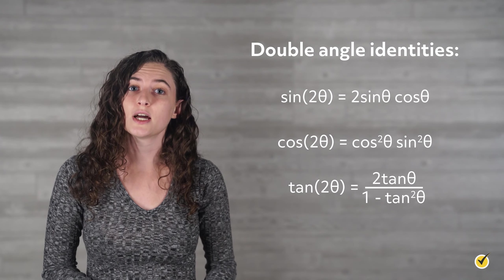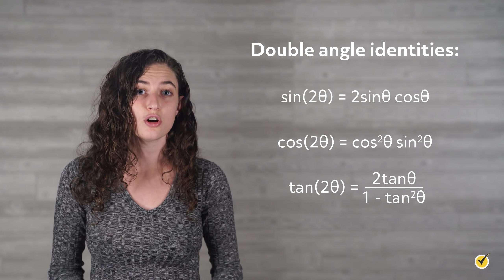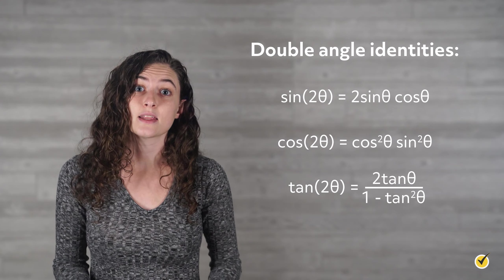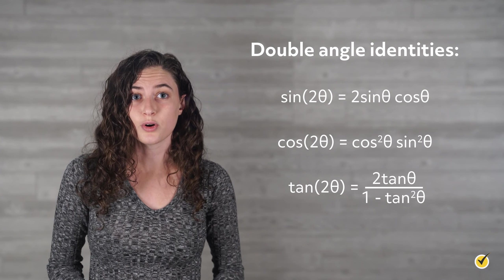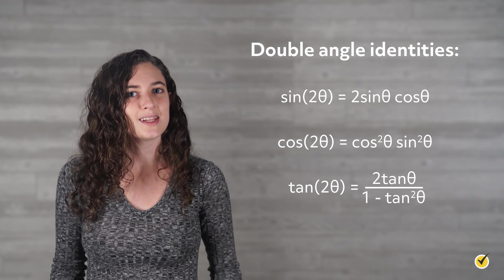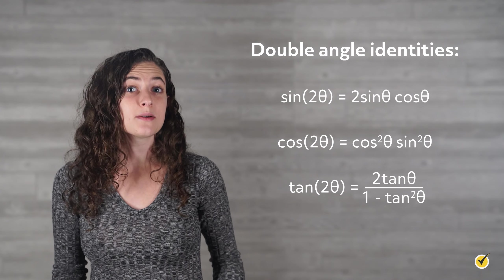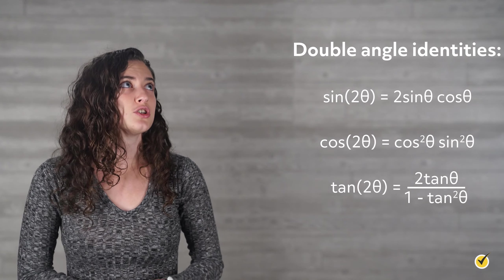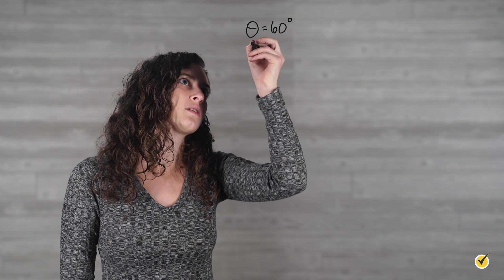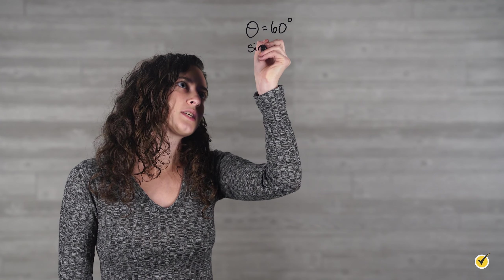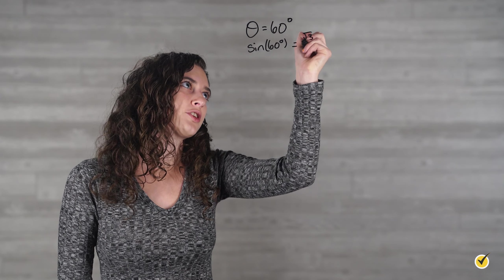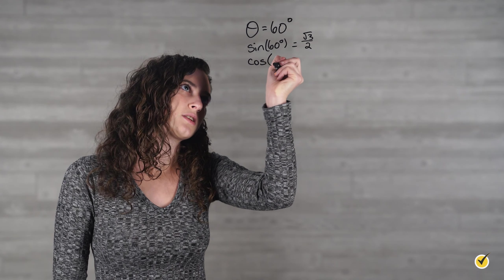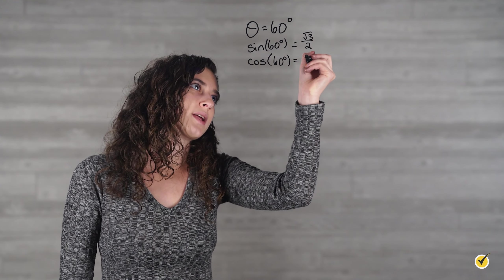To see how these work, let's find the cosine of 120 degrees by using the cosine double angle identity. That means that theta will be 60 degrees, which is on our unit circle. 120 degrees is also on our unit circle, so we will know quickly if our answer is correct. We set up the information we need and then write down our formula. So for this problem, theta is equal to 60 degrees, the sine of 60 degrees is the square root of 3 over 2, and the cosine of 60 degrees is 1 half.